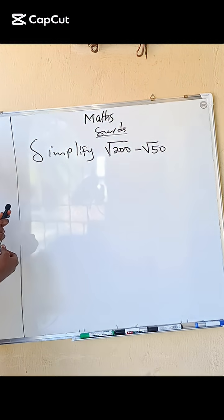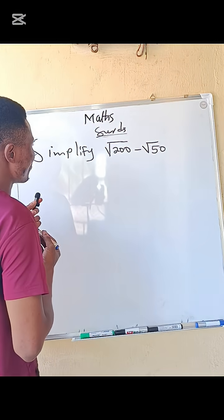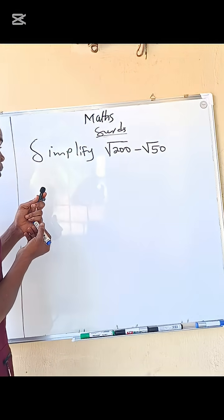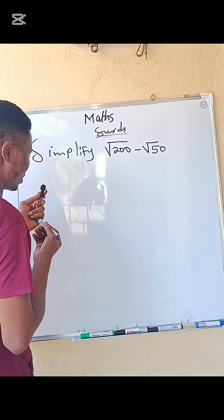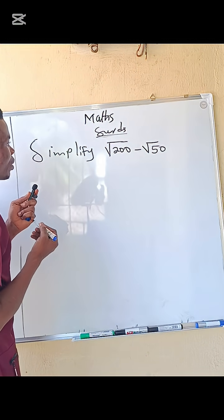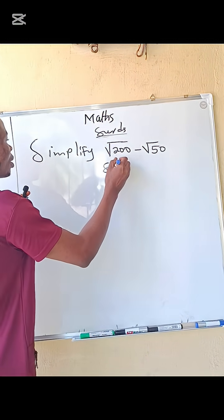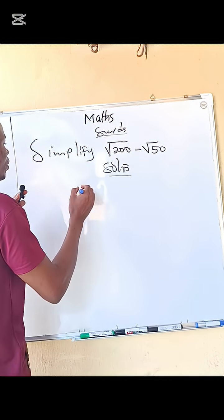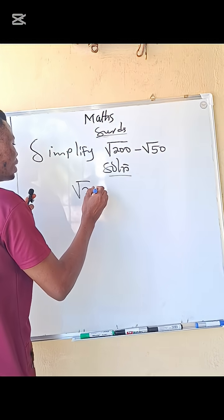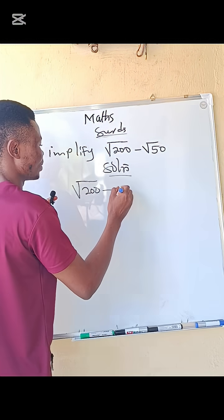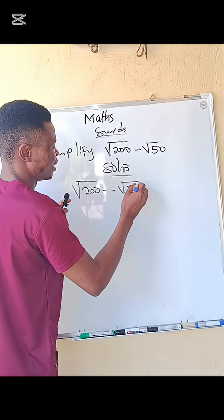Good day, my beloved followers and subscribers. Please let's see what we can do with this question. Let's tackle this question. It's very simple; it's coming from surds. The solution we have is √200 - √50.